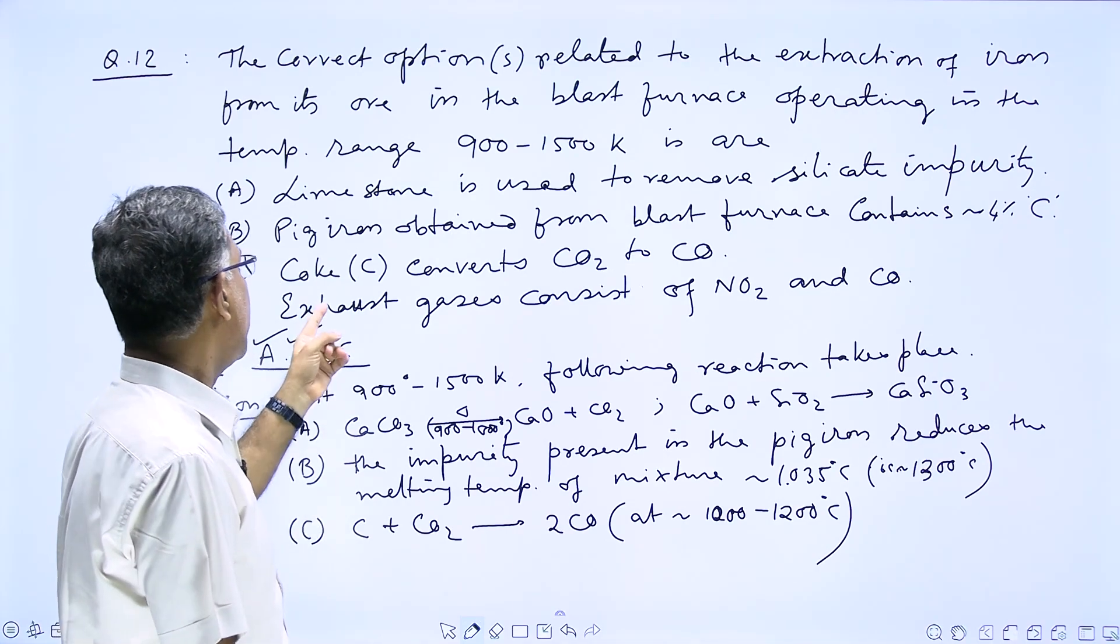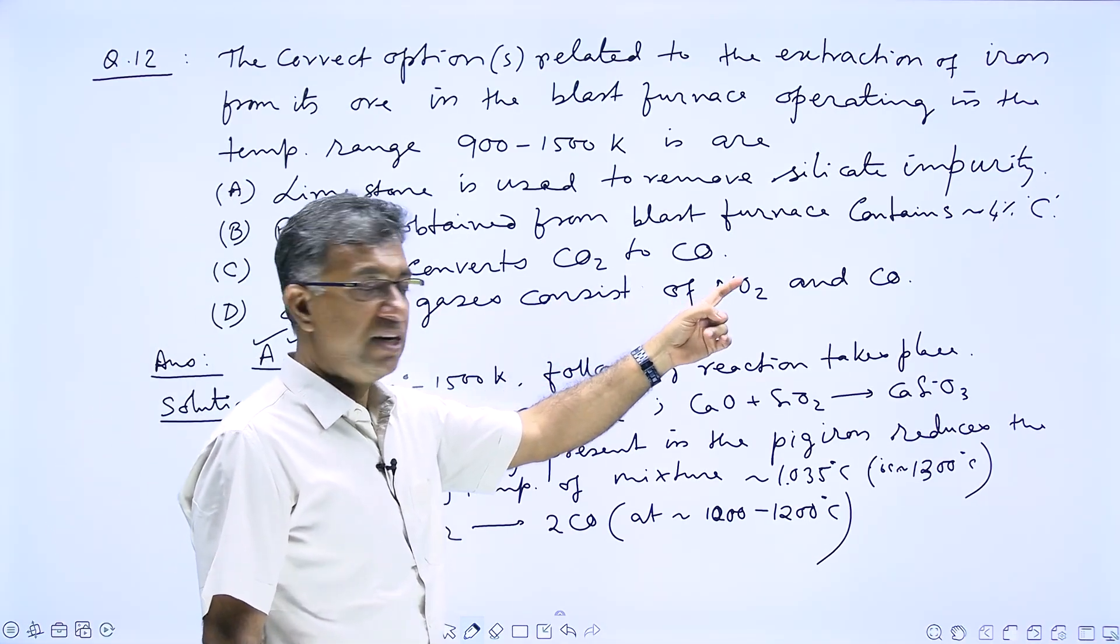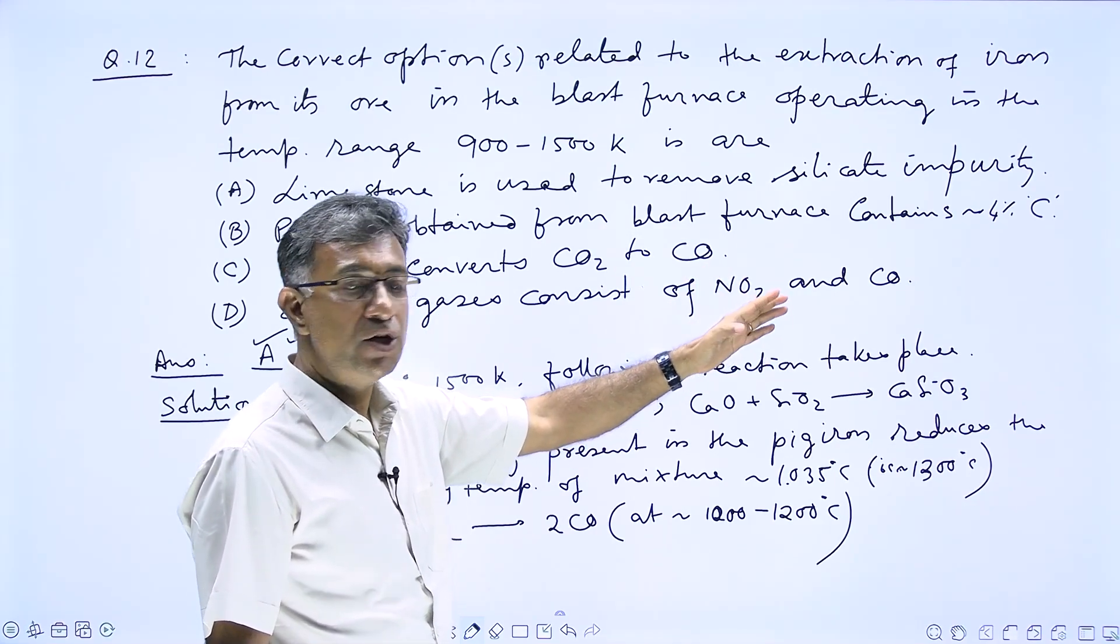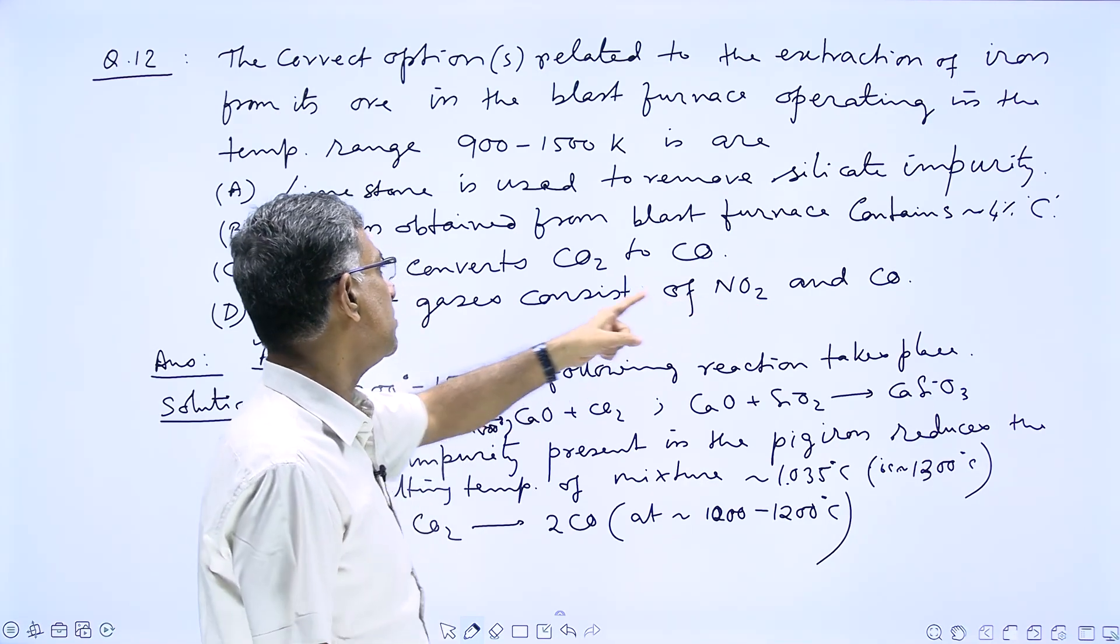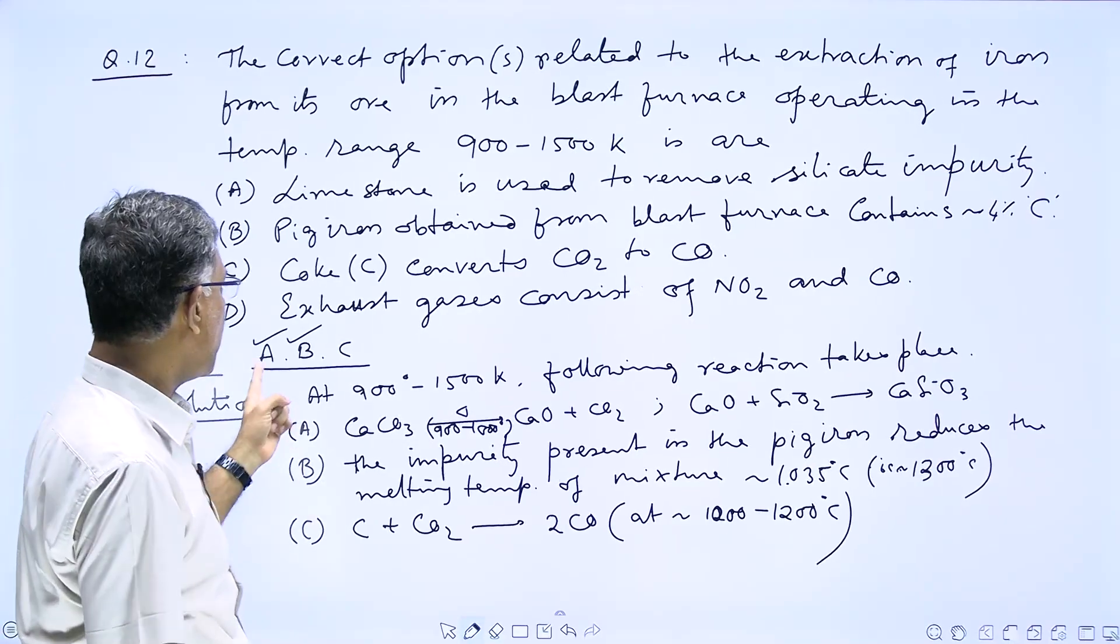So the answer is ABC. D is incorrect because it says exhaust gas consists of NO2, but it never contains NO2. It contains nitrogen, CO, and CO2. So these are the main constituents. Because of that reason, option D is incorrect. The final answer is ABC.